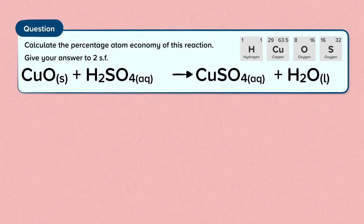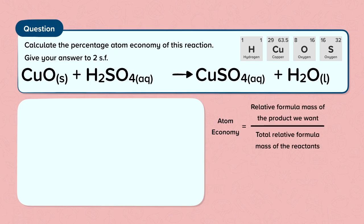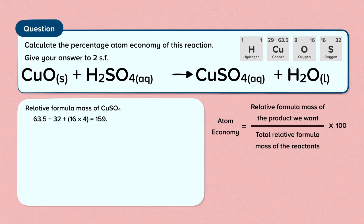Here is how to calculate the atom economy. The question asks: calculate the percentage atom economy of this reaction, giving your answer to two significant figures. The atom economy is the relative formula mass of the product that we want divided by the total relative formula mass of the reactants, times 100. The product we want is copper sulfate. The relative formula mass of copper sulfate is the mass of copper plus sulfur plus 4 oxygens: 63.5 plus 32 plus 16 times 4, which gives a total of 159.5.